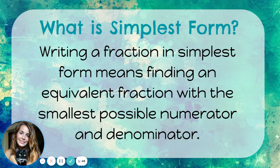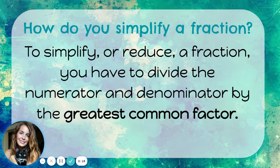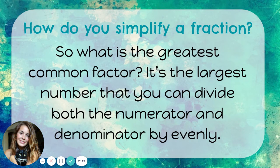So what is simplest form? Writing a fraction in simplest form means finding an equivalent fraction with the smallest possible numerator and denominator. How do you simplify a fraction? To simplify or reduce a fraction, you have to divide the numerator and denominator by the greatest common factor, sometimes abbreviated as GCF. The GCF is the largest number that you can divide both the numerator and denominator by evenly.